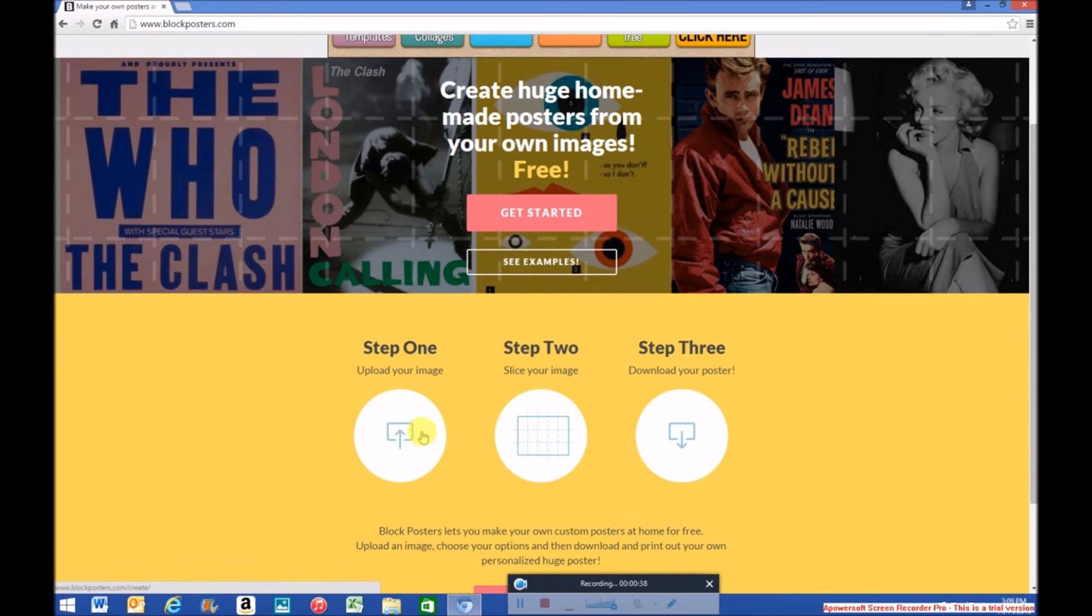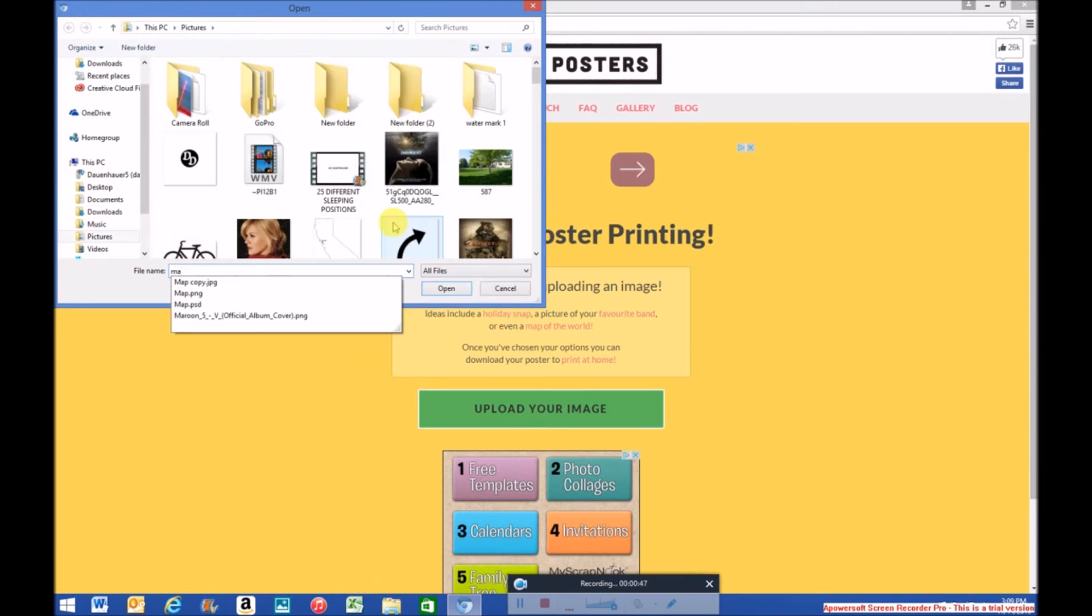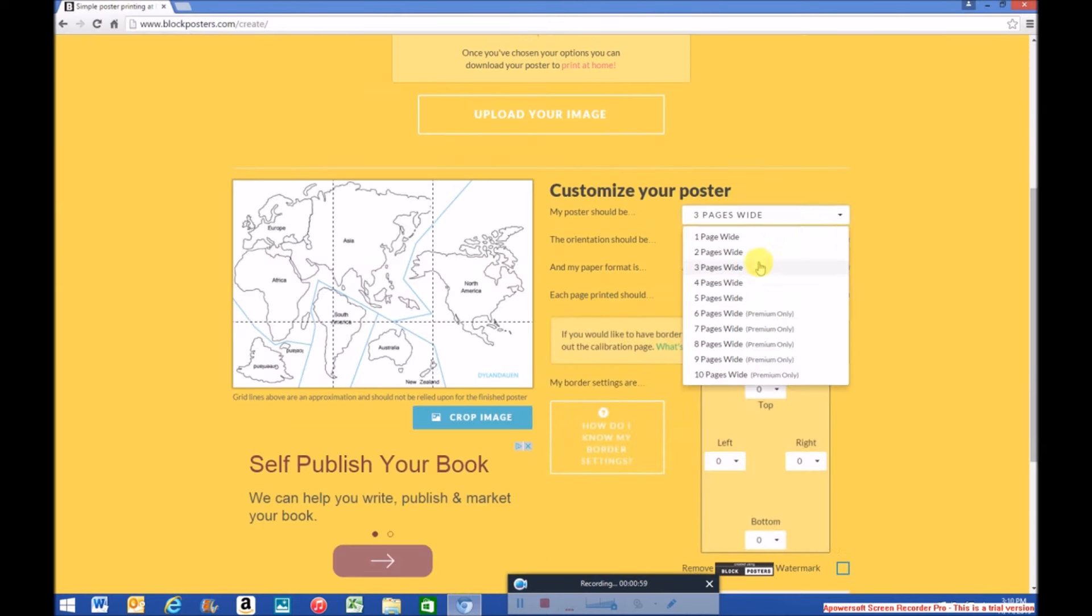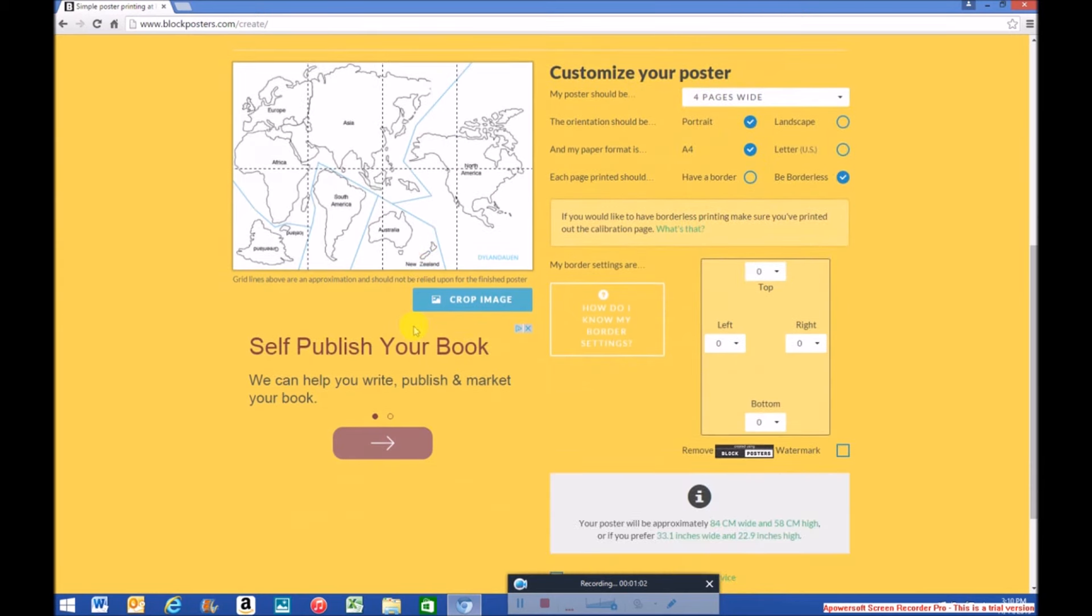Once you get there, upload your map. I crop my map into four pages wide without a border, but make it as big as you want it to be. Download and print your map.